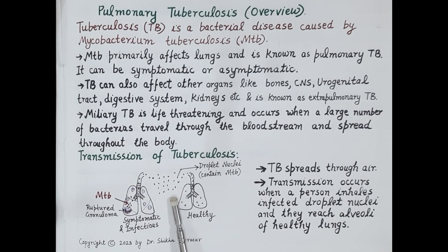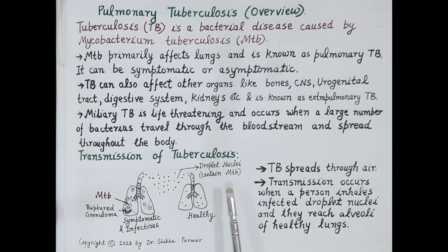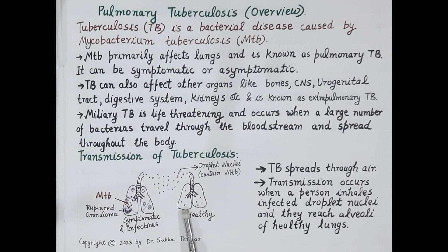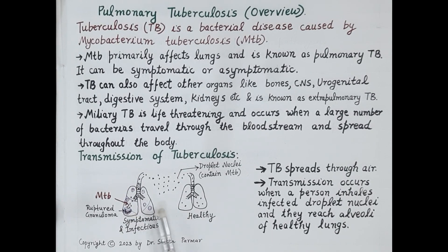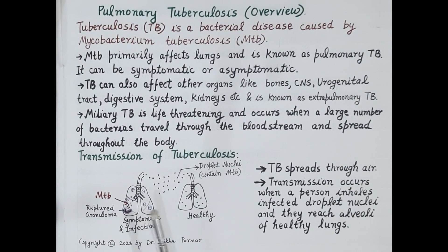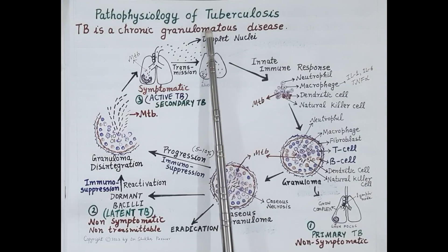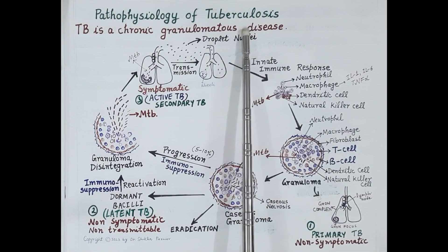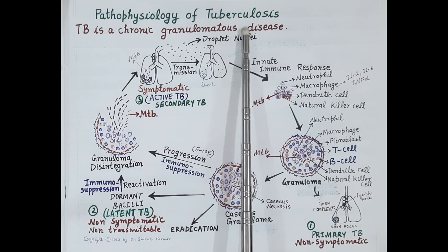These droplets remain suspended in the air for hours. The droplets of mucus or saliva carrying the bacteria are termed as droplet nuclei. Transmission of TB occurs when a healthy individual inhales these droplet nuclei and they reach the alveoli of the lungs. This is how Mycobacterium tuberculosis is transmitted from a symptomatic infectious individual to a healthy individual.